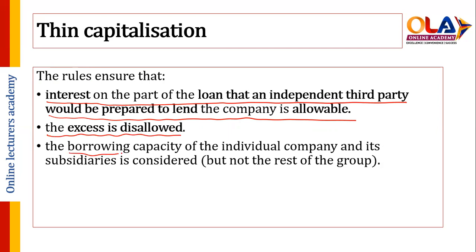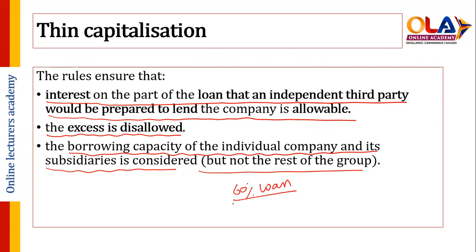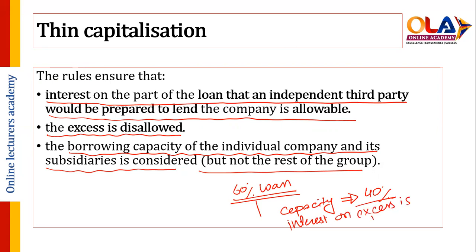The borrowing capacity of the individual company and its subsidiaries is considered, but not the rest of the group. For example, if you receive a loan of 60 percent from your subsidiary but your capacity as a loan from an independent party is only 40 percent, interest on the excess loan is disallowed and you will not be able to get a tax benefit against that excess interest.